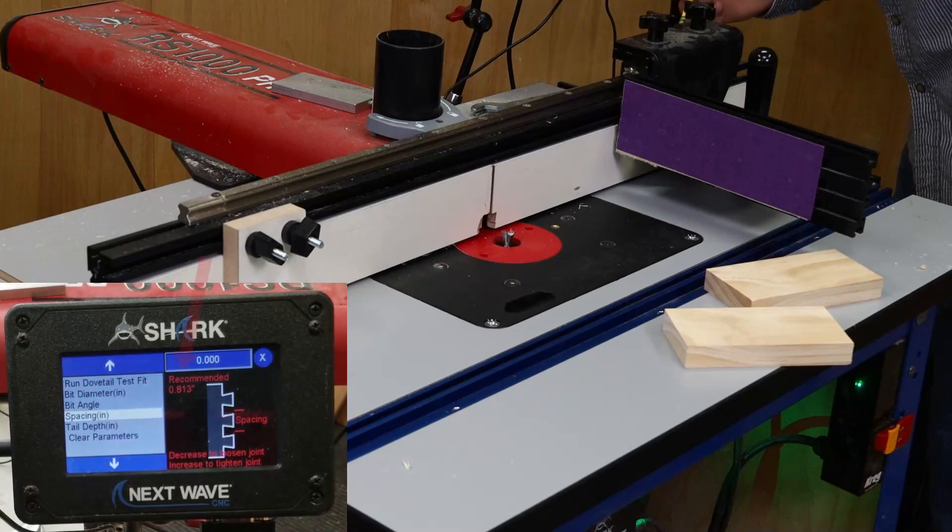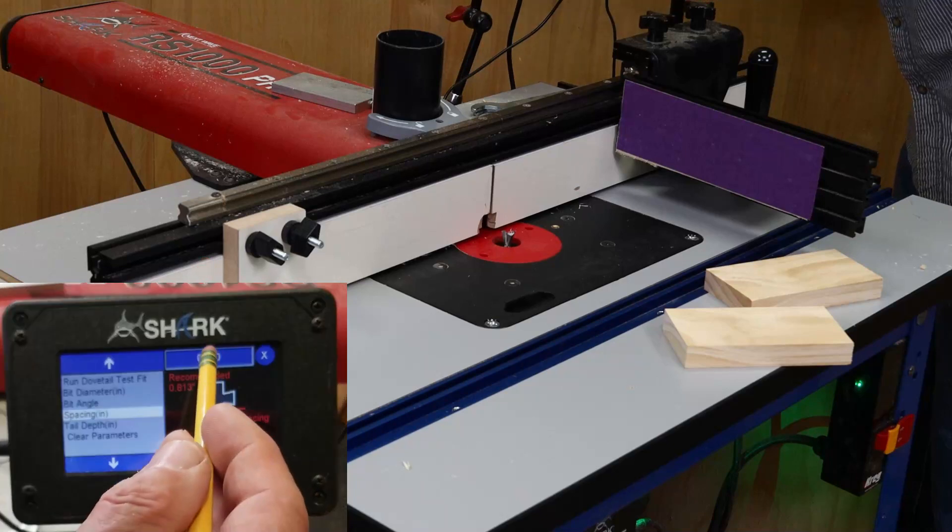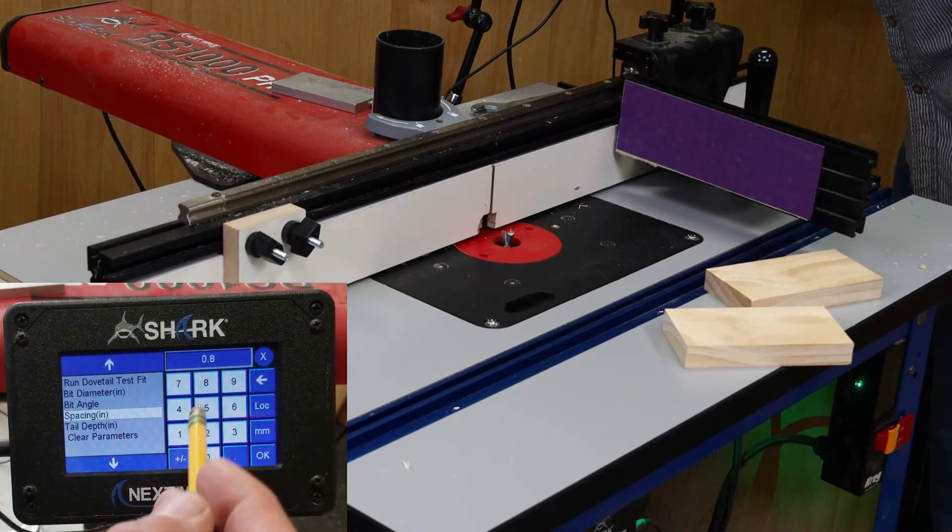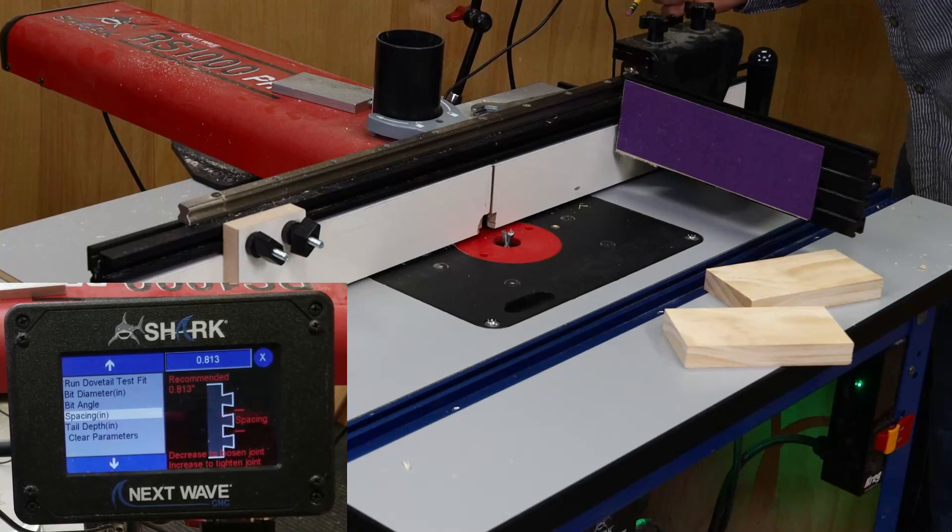Next, set the tail spacing. Notice how it recommends the spacing of 0.813. This is a good place to start when using a bit for the first time. If the test joint proves too tight or loose, I can return to this setting and fine tune the fit by adjusting the spacing up or down a small amount.